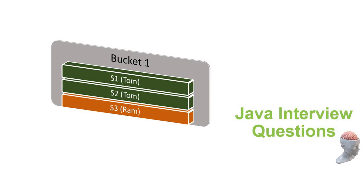So what are we seeing here? S1 and S2 are actually equal — 'tom' and 'tom' are equal. That confirms contract number one: when two strings are equal, the hashCode must be equal. Since the two strings are equal, they belong to the same bucket. The string 'tom' cannot belong to another bucket — it always needs to come to the bucket responsible for hashCode 1.